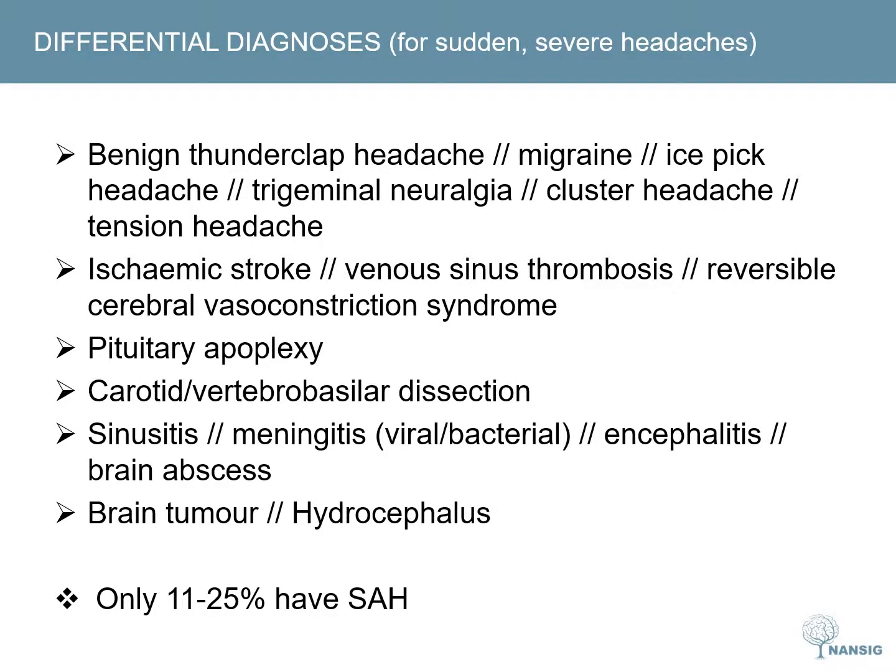There is a wide differential diagnosis for a thunderclap headache, and as you can see on the slide, the causes are very varied — from infective causes to tumours to other types of vascular disorders such as strokes, venous sinus thrombosis, and reversible cerebral vasoconstriction syndrome. Pituitary apoplexy is an important differential and should be considered particularly when there is a visual disturbance or multiple oculomotor deficits. It should be noted that the minority of patients with a thunderclap headache actually have a subarachnoid haemorrhage, but it is very important to exclude this diagnosis.